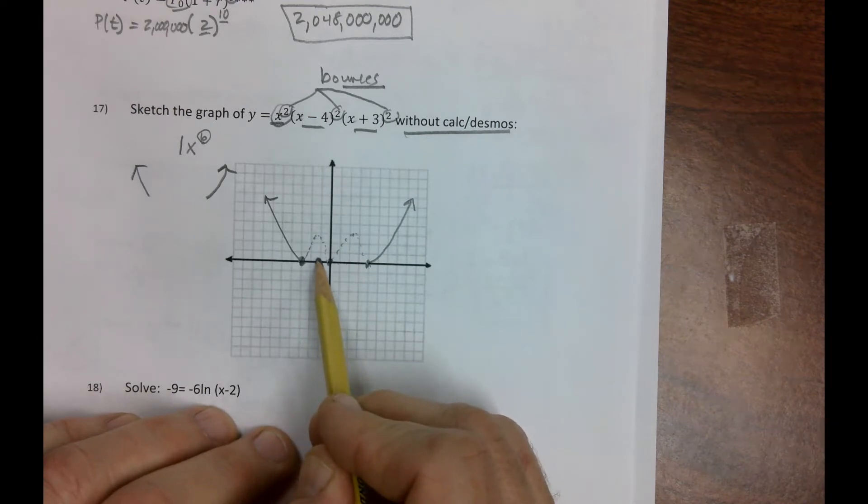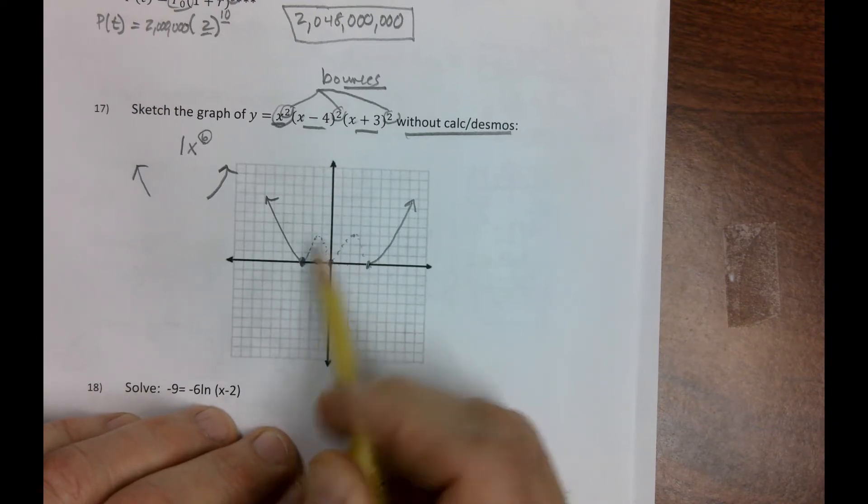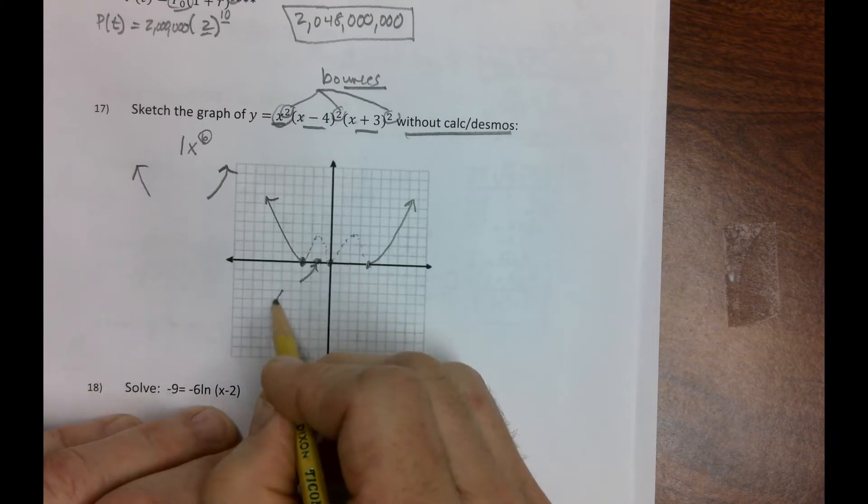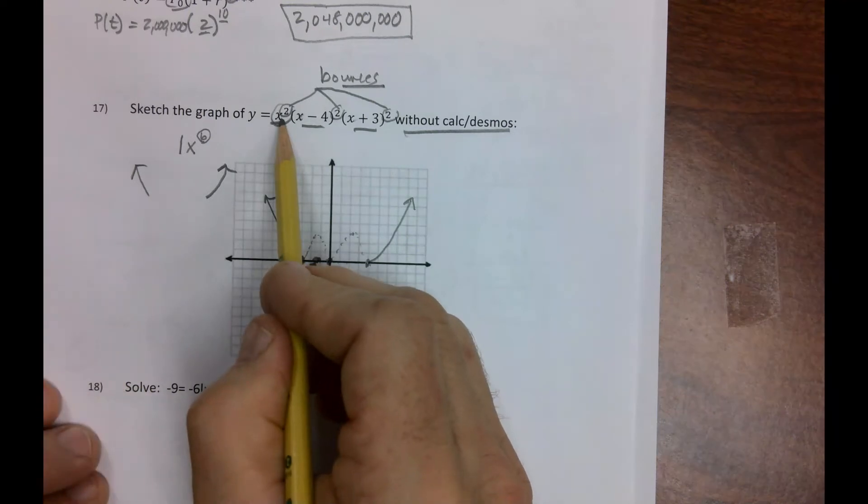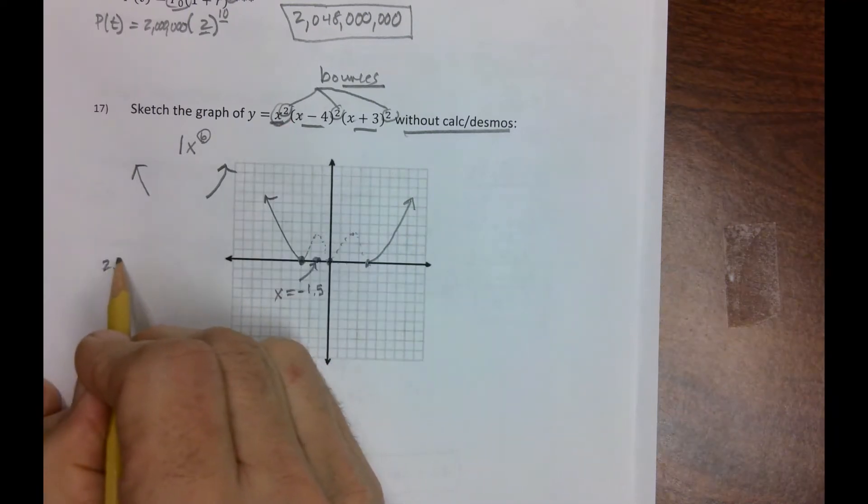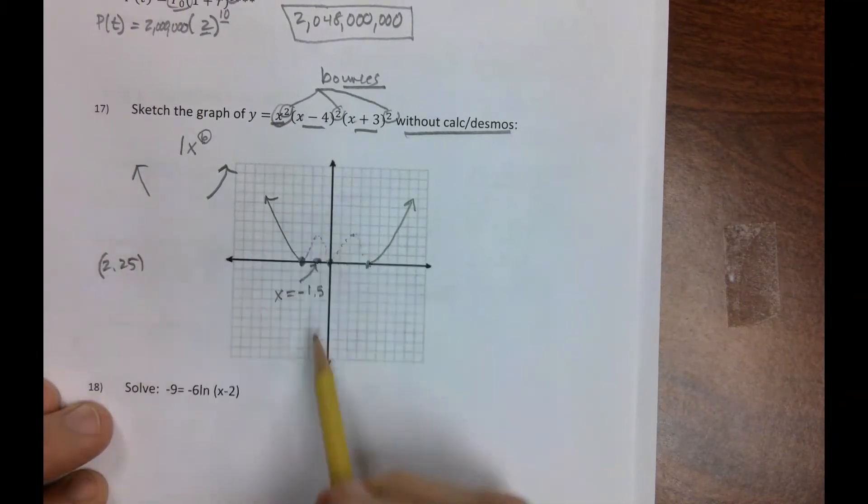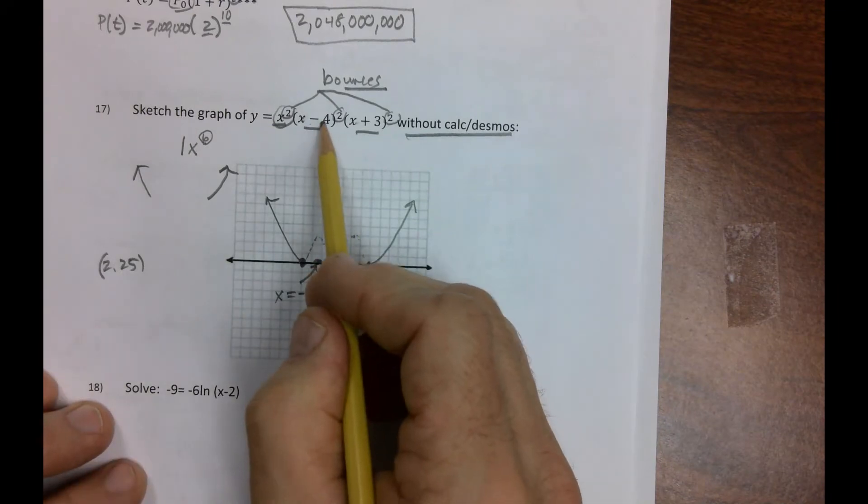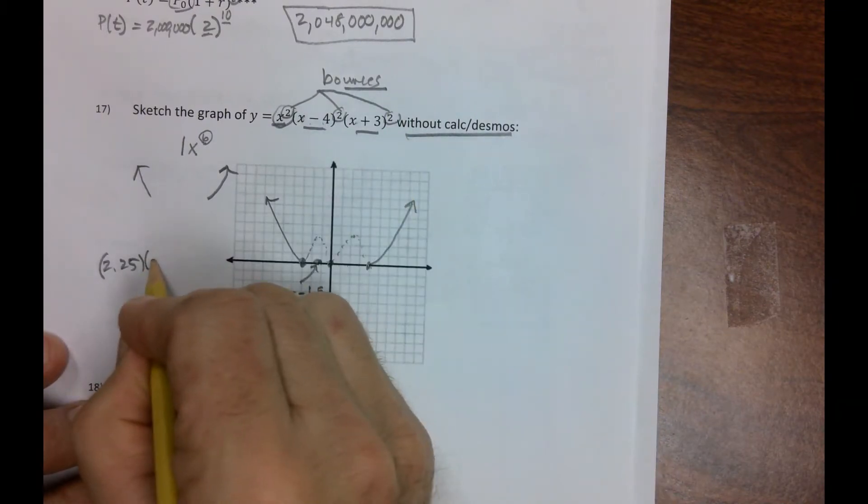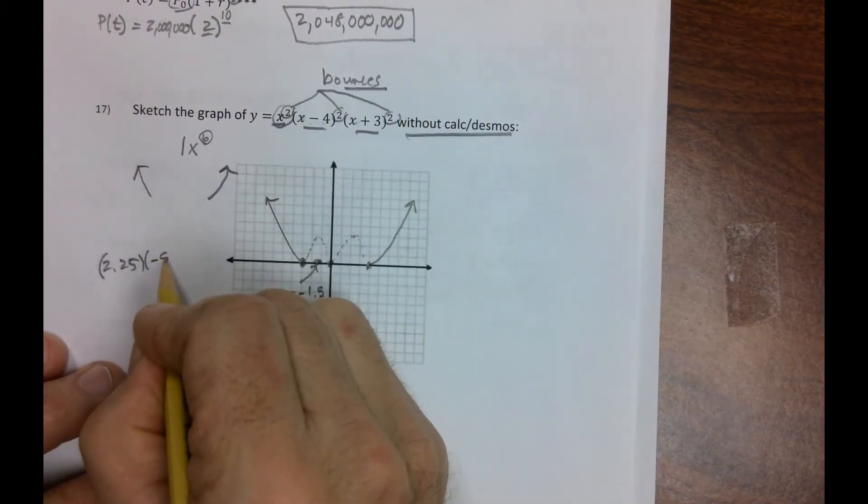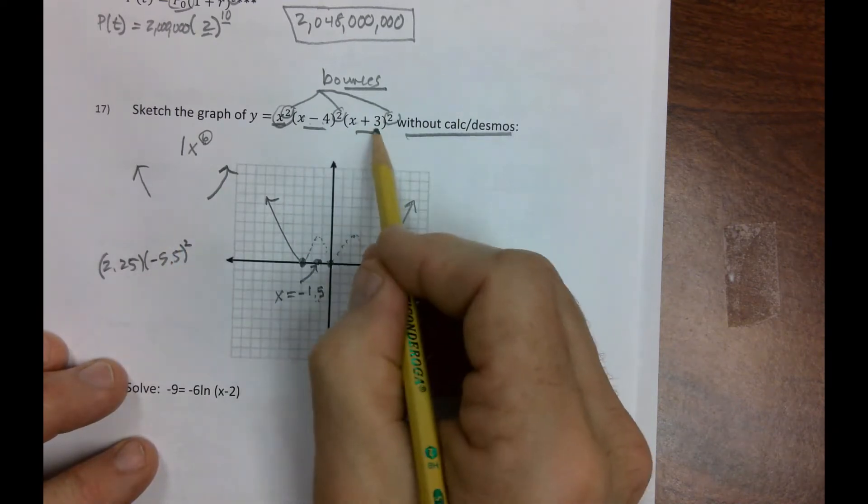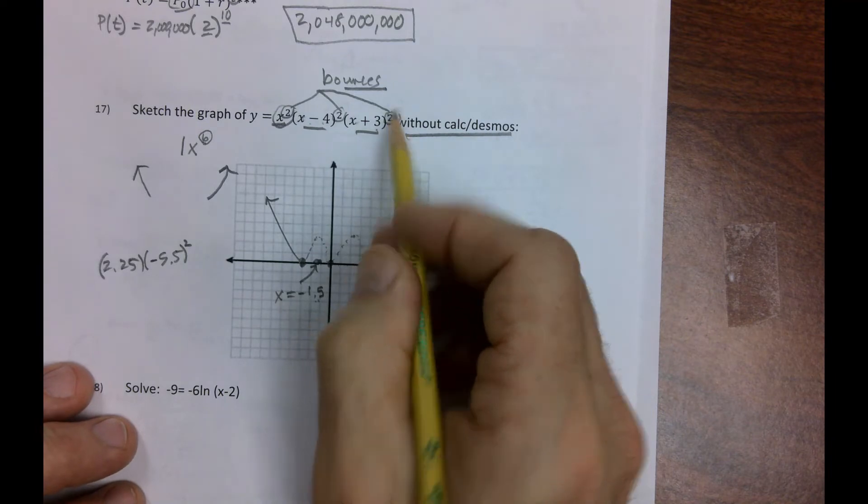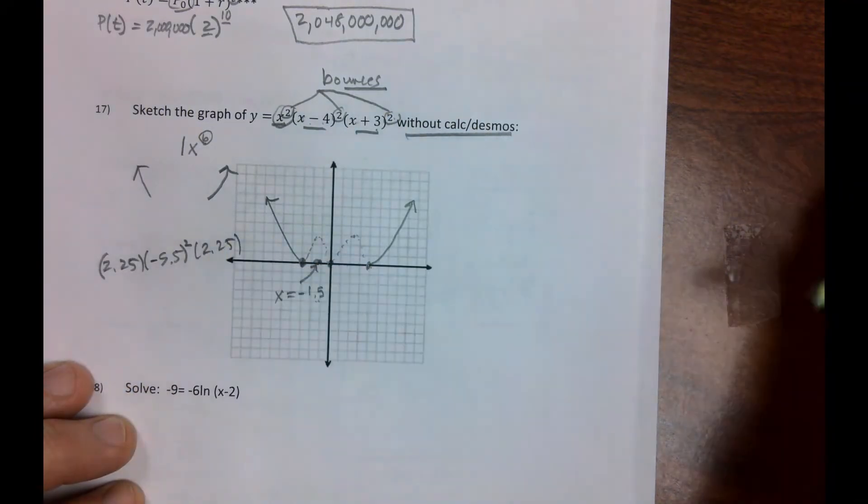We have to plug in the halfway value. So if this is negative 3 to here, this is going to be negative. We have to say, what does y do when x is negative 1.5? And so, negative 1.5 squared is 2.25. Negative 1.5 minus 4 is negative 5.5. I don't know what that is, we'll figure that out in a minute. Negative 1.5 plus 3 is 1.5 squared is 2.25.